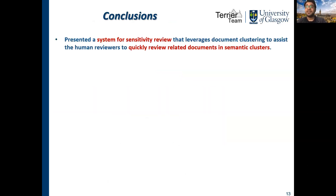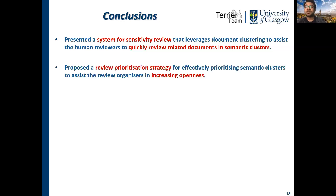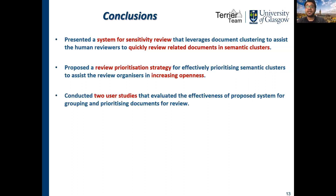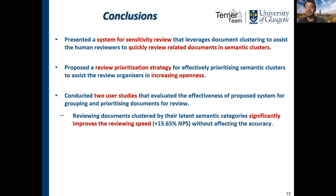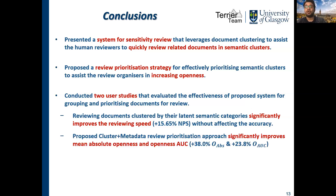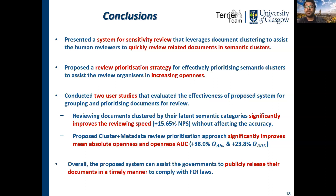To conclude, in this paper we presented a system for sensitivity review that leverages latent semantic categories to assist human reviewers to quickly review related documents. In addition, we proposed a review prioritization strategy to assist review organizers in increasing the number of documents open to the public in a fixed reviewing time budget. We conducted two user studies that evaluated the effectiveness of different clustering techniques, document metadata, and automatic sensitivity classification for grouping and prioritizing documents for review. We showed that reviewing documents in semantic clusters can significantly increase reviewer efficiency, and our proposed review prioritization strategy can significantly improve openness. Overall, these contributions can assist governments to publicly release their documents in a timely manner to comply with freedom of information laws. Please refer to our paper for more details. Thanks for listening.